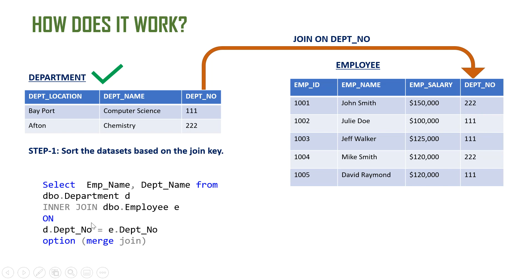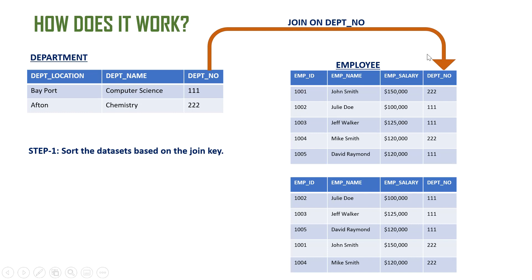This is the query we're going to use for our example, and we're going to force it to use the merge join. It is not a recommended practice to force SQL Server to use a particular physical join, but we're going to do it just for our understanding and to see the execution plan for the merge join.